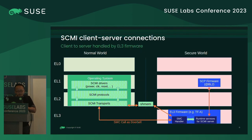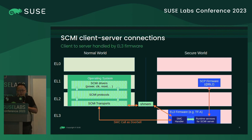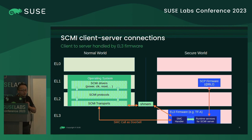Another implementation is that you don't need a trusted OS — you simply implement the SCMI server inside the EL3 firmware. But you can still dedicate some SCMI requests to the SCP firmware if your solution integrates an SCP chip.